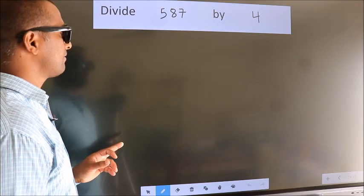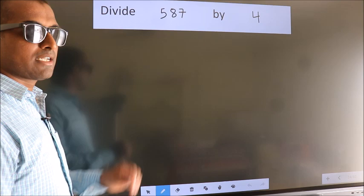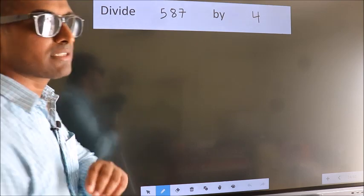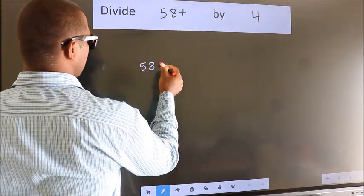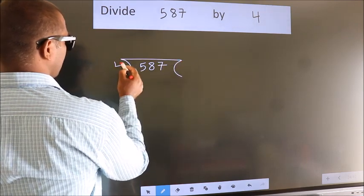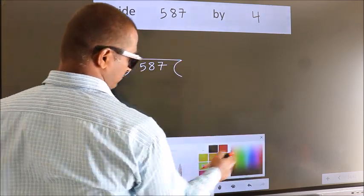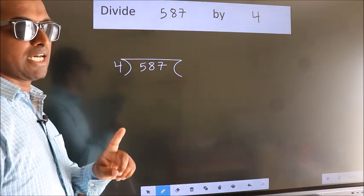Divide 587 by 4. To do this division, we should frame it in this way: 587 here, 4 here. This is your step 1.